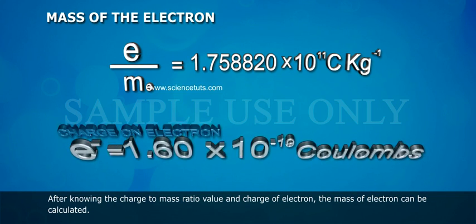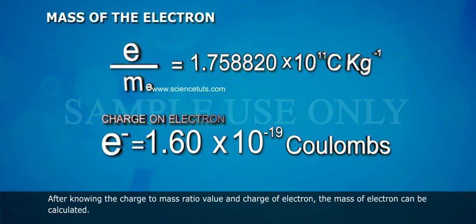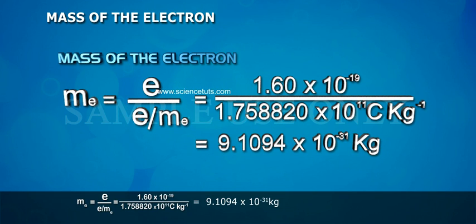After knowing the charge to mass ratio value and charge of electron, the mass of electron can be calculated. That is, me = e/(e/me) = 1.60 × 10^-19 Coulomb / 1.758820 × 10^11 Coulomb per kg = 9.1094 × 10^-31 kg.